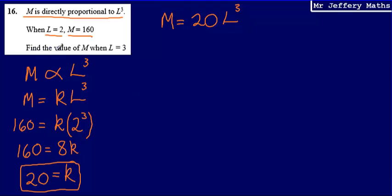Now, what I'm asked to do is find the value of M when L equals 3. Well, now that I know what the relationship is between M and L cubed, I know that M is equal to 20 lots of L cubed. I just have to substitute L cubed into this formula. So I can say that M will be equal to 20 multiplied by 3 cubed.